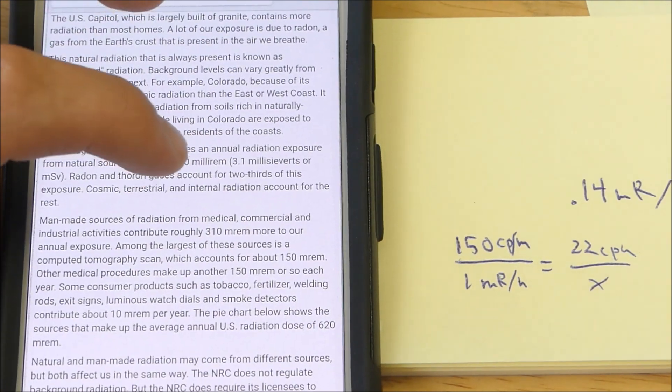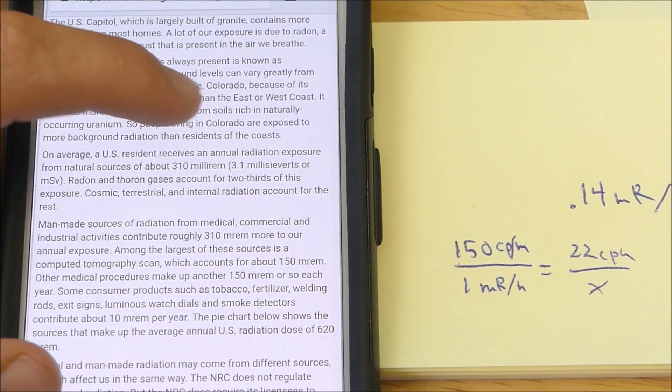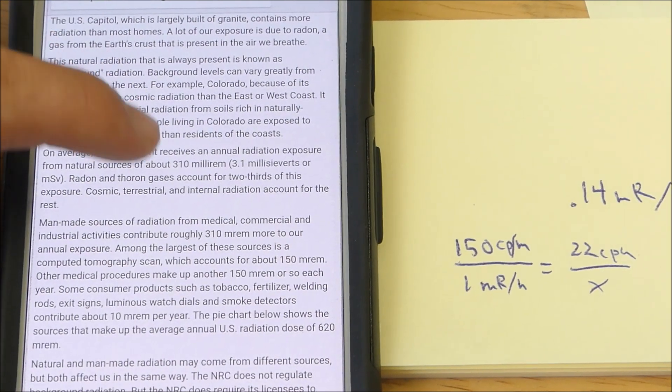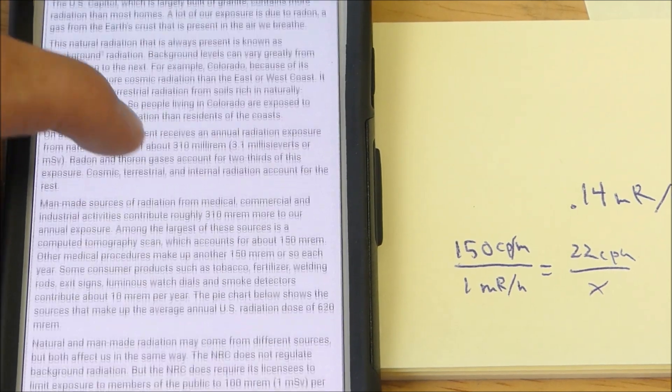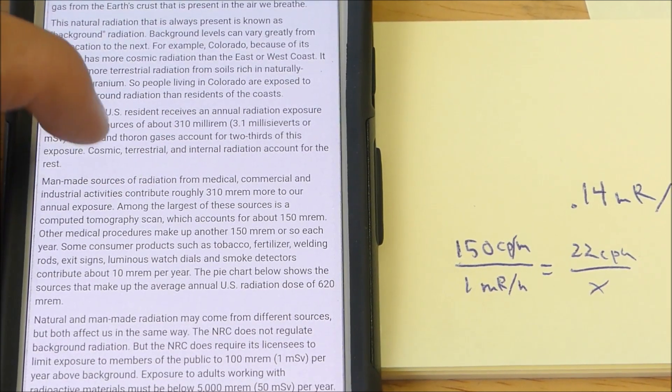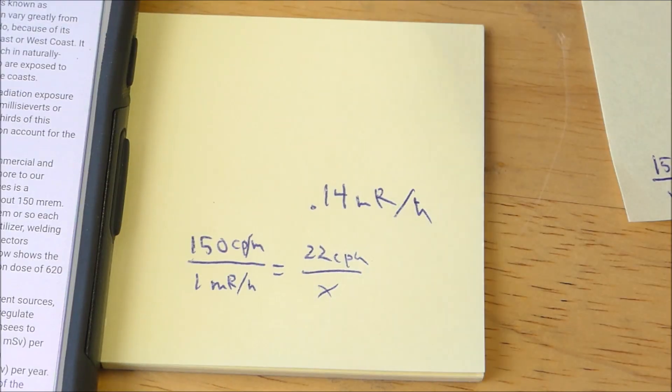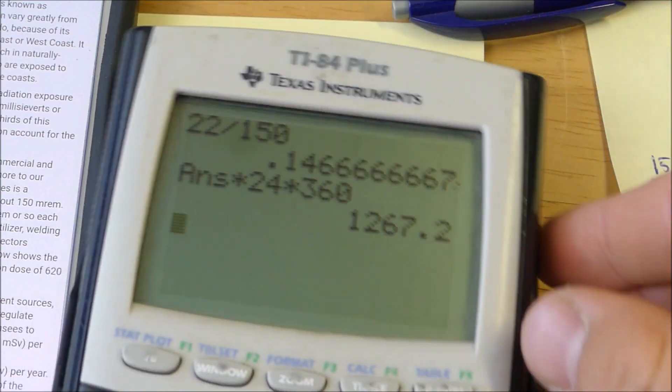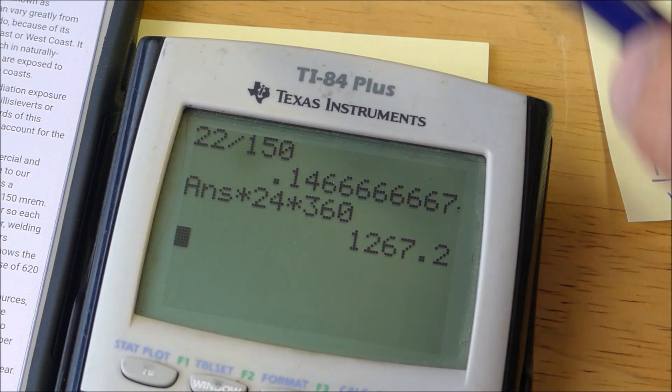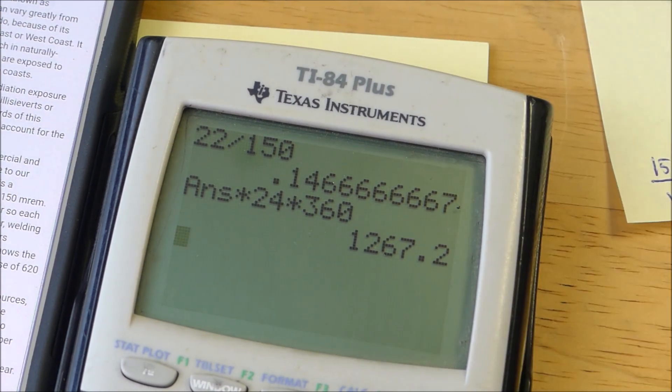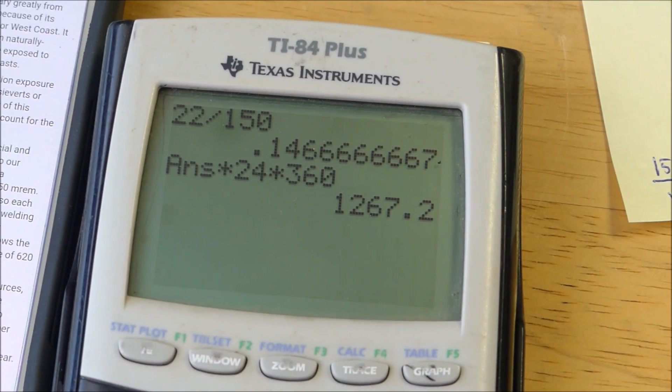Alright, so this is pretty funny. So it says, on average in the U.S., the U.S. resident receives an annual radiation exposure from natural sources of approximately 310 millirems per year. And then another 310 millirems from man-made radiation sources. So that's 610 millirems per year. And my room currently is getting an average of 1,267 millirems per year, which is twice the average of radiation exposure from the background of the United States. Which means my room has a lot more radiation than most places.